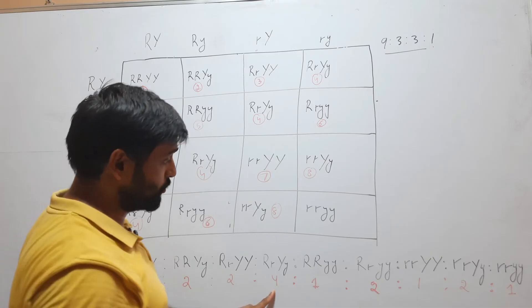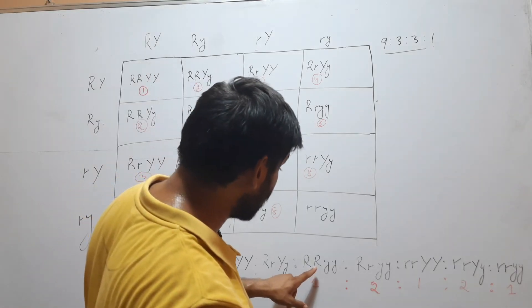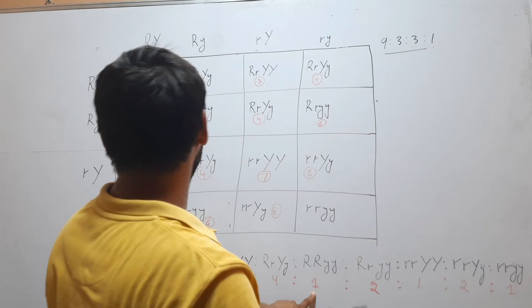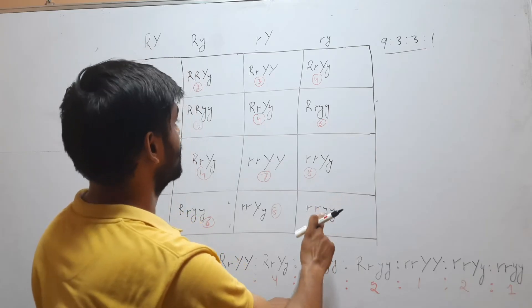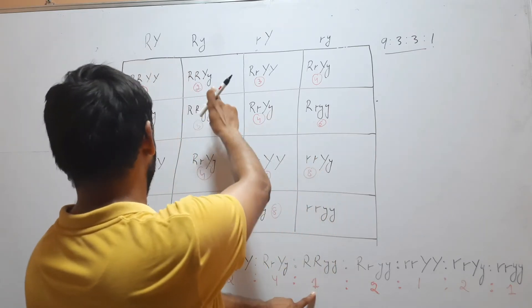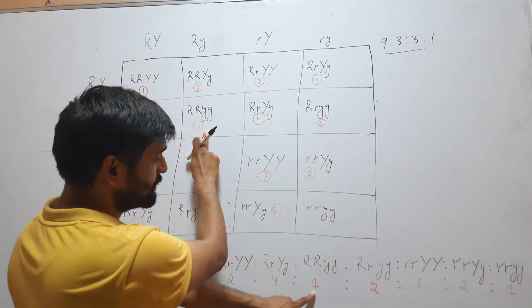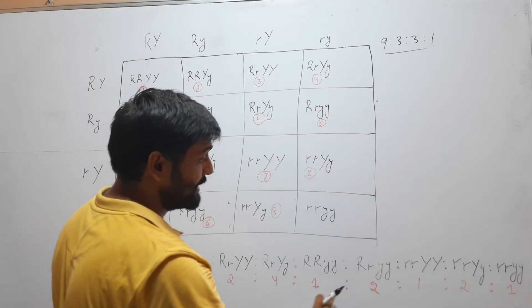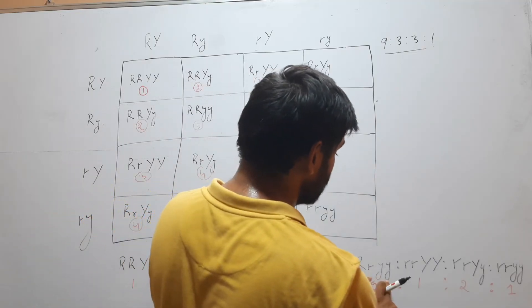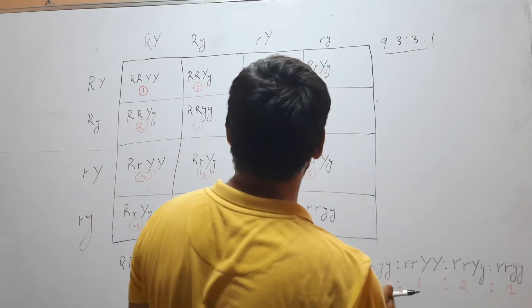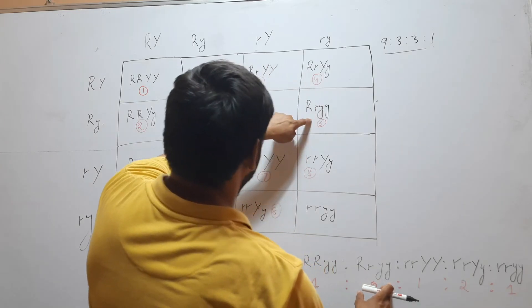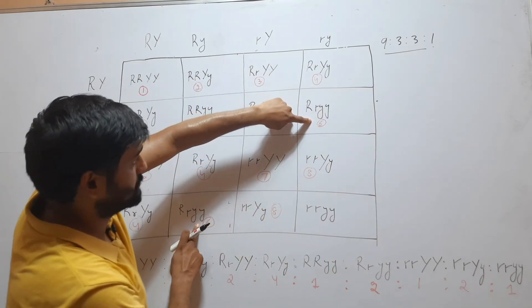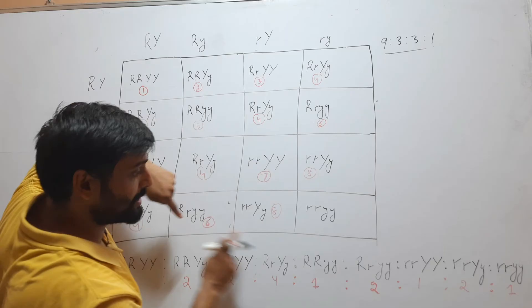The next combination is RRyy. It comes there, so it comes 1 time. We will write 1. Next is Rryy. This comes there and there, so we will write 2.